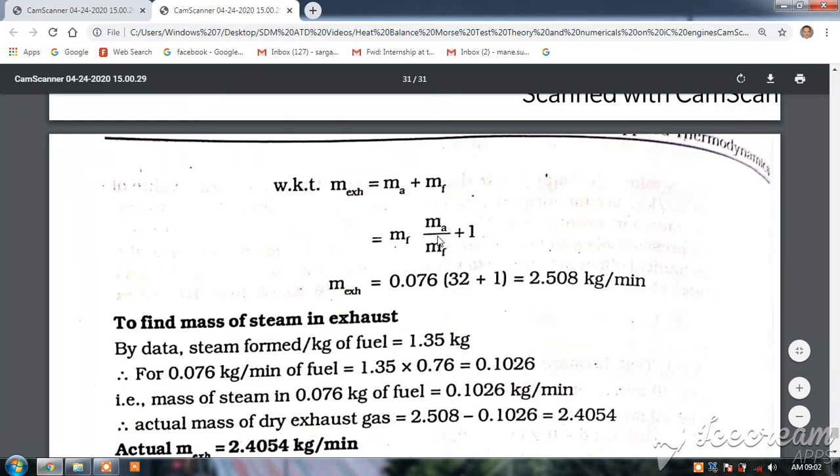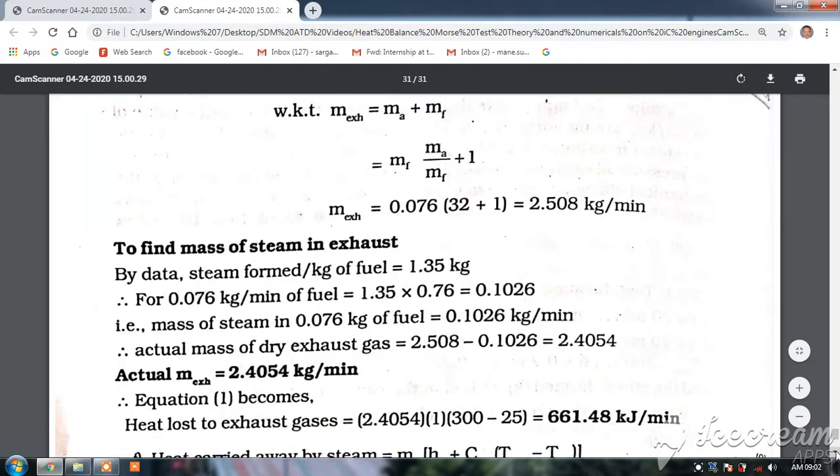The air-fuel ratio is given as 32, and mass of fuel is known, so this is easy to solve. That is why m_exhaust = m_A/m_F + 1. This is the way you solve for mass of exhaust.